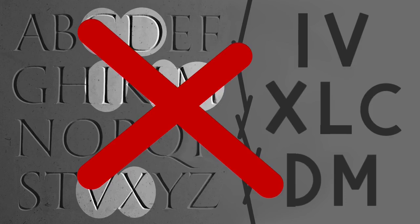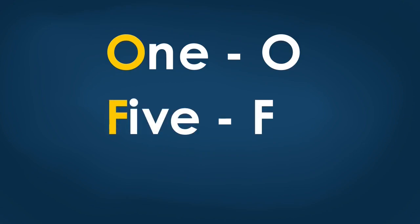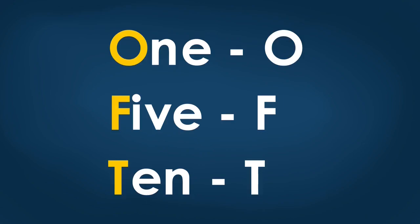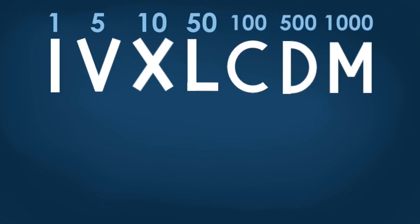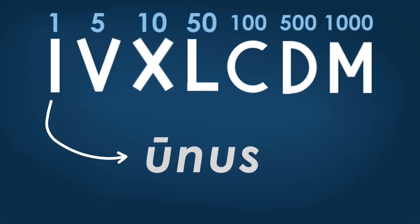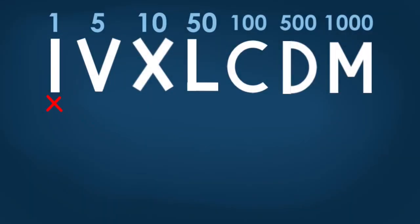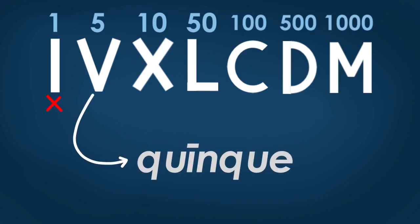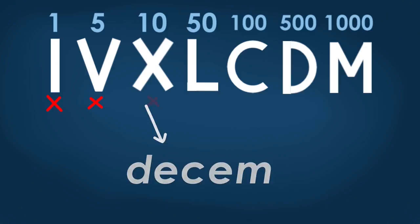Maybe there is something to do with the way they wrote the names of the numbers — just like if we used 'O' to write 1, 'F' to write 5, and 'T' to write 10. Let's see how the Romans called each number. In Latin, one was called 'Unus' — it starts with a U, not an I. Five was called 'Quinque' — doesn't start with a V. Ten was called 'Decem' — doesn't start with an X.